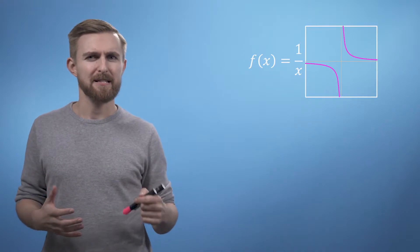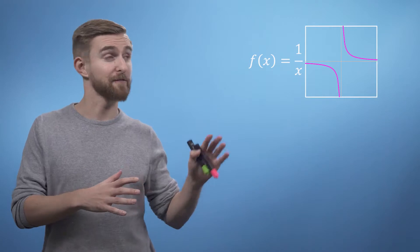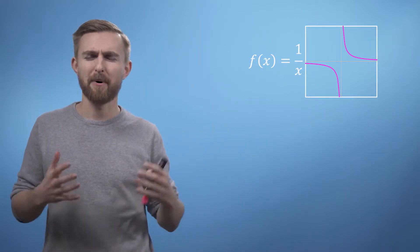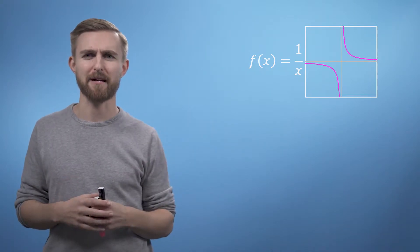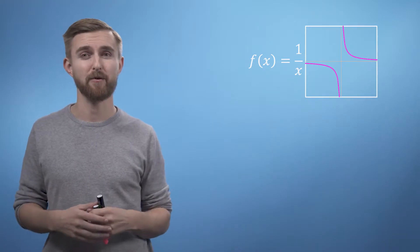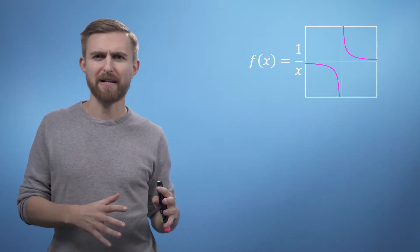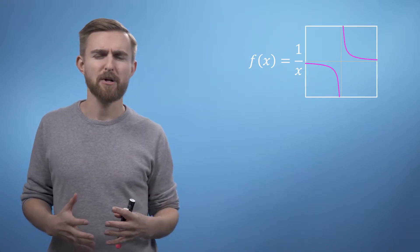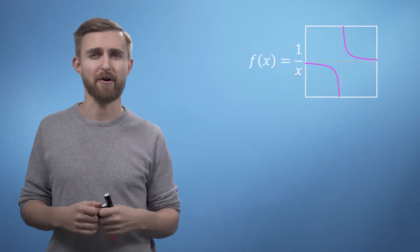Something quite interesting must be happening at this point, as on the negative side the function drops down, presumably towards negative infinity, but then it somehow re-emerges from above on the positive side. This sudden break in our otherwise smooth function is what we refer to as a discontinuity. We've mentioned already that the operation divide by 0 is undefined, which means that this function simply doesn't have a value at the point x equals 0.